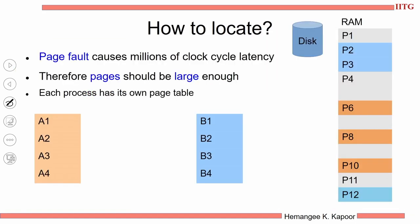Consider two processes A and B. A has pages A1 to A4, B has B1 to B4, randomly loaded in the RAM — not all pages are present. Certain pages are in RAM, the remaining could be in the disk. When process A wants to access A4 and A4 is not in the RAM, that is called a page fault. When a page fault occurs, we go to the disk, find the page, bring it, put it in the RAM, and then read it.